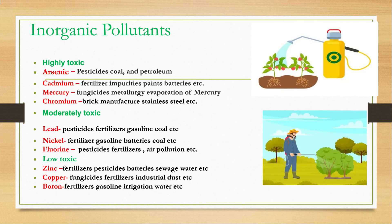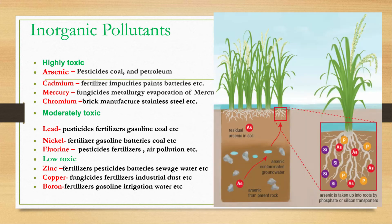Inorganic pollutants are heavy metals, categorized according to their toxicity. Arsenic, cadmium, mercury, and chromium are highly toxic to plants, humans, and animals. Lead, nickel, and fluorine are moderately toxic. Low-toxicity metals include zinc, boron, and copper.